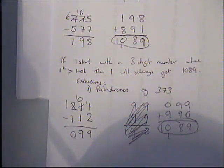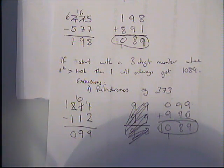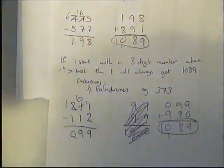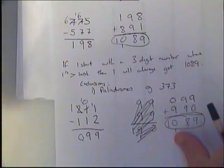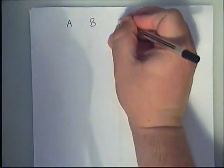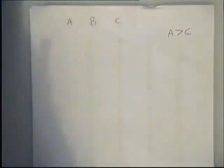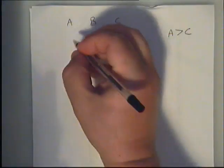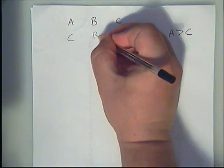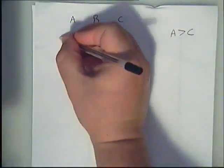Now I need to prove my conjecture always works, which means using algebra. This will really test whether I understand what the process of adding and taking away actually is. I don't know what my three digits are, so I'll put them down as a, b, and c, where a is bigger than c. I'm going to reverse the digits to get c, b, a, and take away.